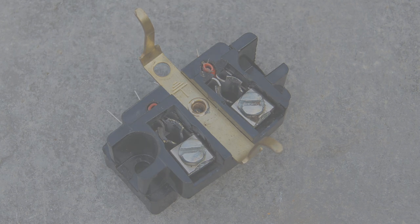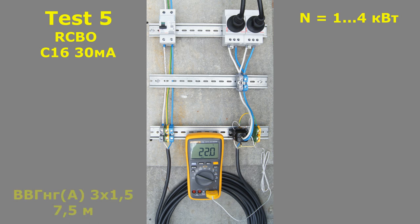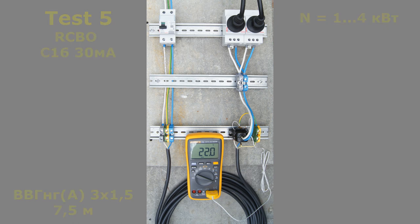Let's continue numbering the experiments of the first part and simplify the assembly. There will be a C16 RCBO at the input. We will limit the maximum load to 4 kilowatts for it. We connect it through a plug and auxiliary sockets. To simulate the remote location of the outlet, power supply will be carried out again through a 7.5 meter long cable. We intentionally form bad contacts between the pins and sockets of the connecting device, as well as between the cable conductors and the outlet clips. We do not tighten them.